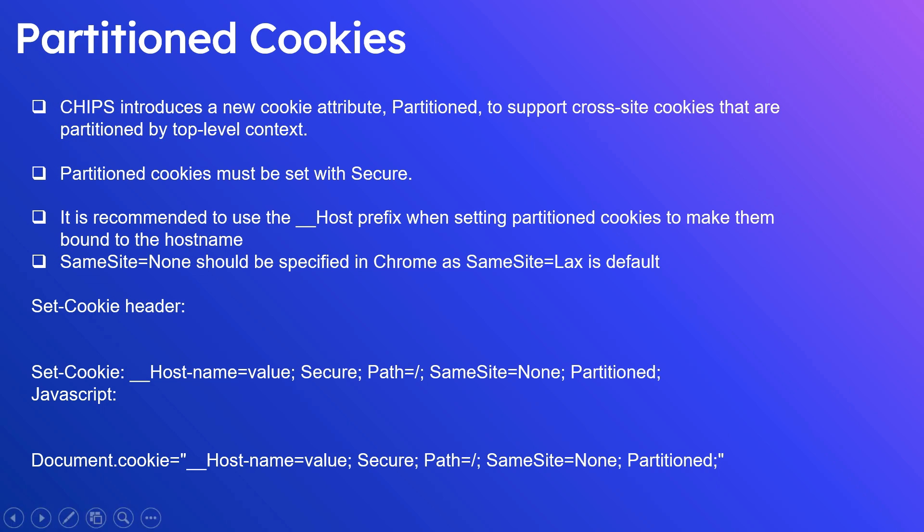This is a sample cookie string to set a partitioned cookie through an HTTP header and through JavaScript. The difference is the prefix — you can see the double-underscore host prefix, then SameSite=None and Partitioned. CHIPS supports basic third-party cookie scenarios through partitioned cookies, meaning the cookie is only available to the top domain from which it was set, without sharing cookies with different top-level sites.